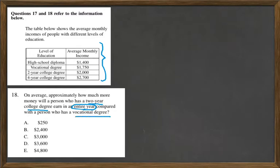We want to find the difference between those two. Here's the vocational degree, and here is the two-year college degree. We see that the difference between $1,750 and $2,000 equals $250. That's the difference for one month.